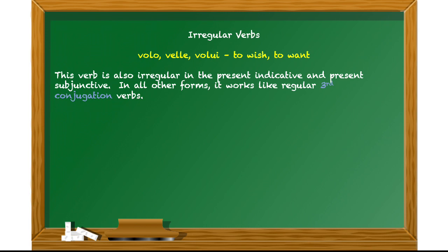In all other forms, it works just like regular third conjugation verbs. So in other words, if you wanted to say pluperfect subjunctive or imperfect indicative, you're going to follow the normal rules that you would have followed for regular third conjugation. So this verb is only irregular in the present indicative and present subjunctive.